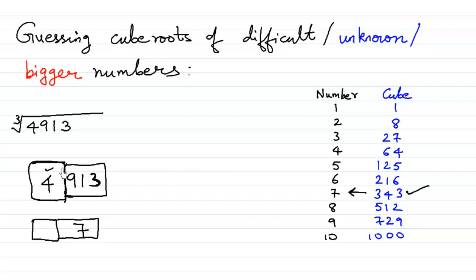And now we come to this number 4. Where does 4 lie in this column of cubes? We can't see a 4 over here but 4 comes in between 1 and 8. What is the smaller number? The smaller number is 1 and what is written opposite to that 1? 1 is written. So we shall be writing a 1 over here.